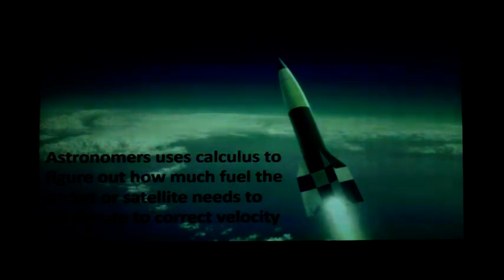Another example to highlight is in rocket science. In order for a rocket to be launched to space or a satellite into orbit, astronomers use calculus to figure out how fast the rocket is going after 25 seconds. How fast is it going after 50 seconds? How much fuel the rocket or satellite needs to accelerate to correct velocity? Because as the rocket goes up, acceleration increases. This is just an example of the way in which calculus and astronomy work together.